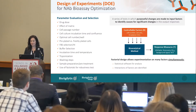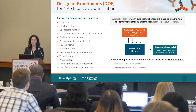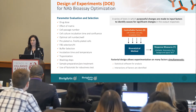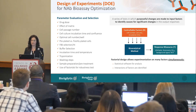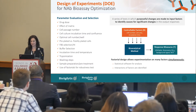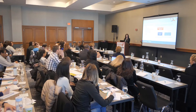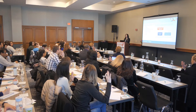Controllable factors are parameters that affect your system and can be either numerical or categorical. The responses must have measured outputs that are at least semi-quantitative for statistical analysis.